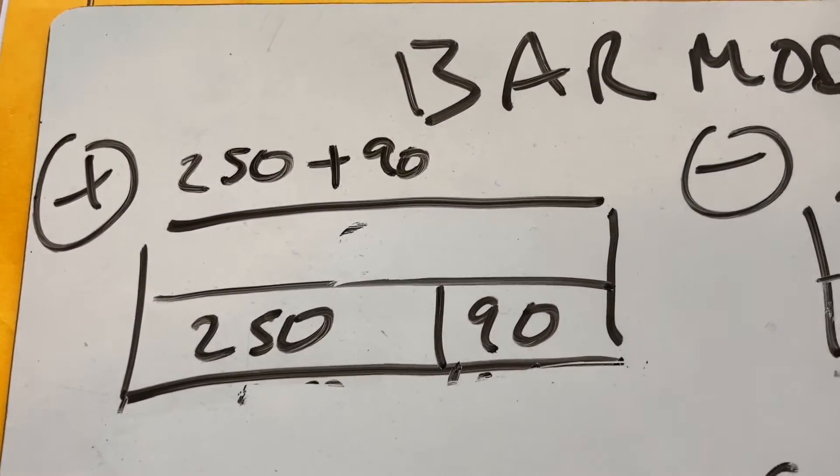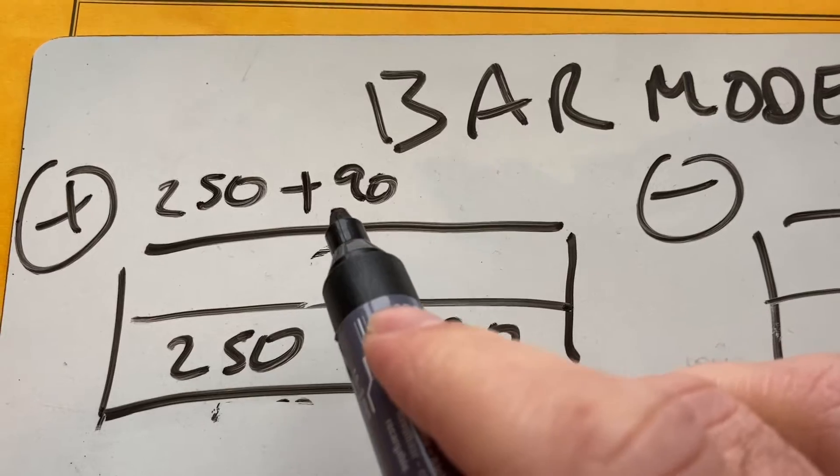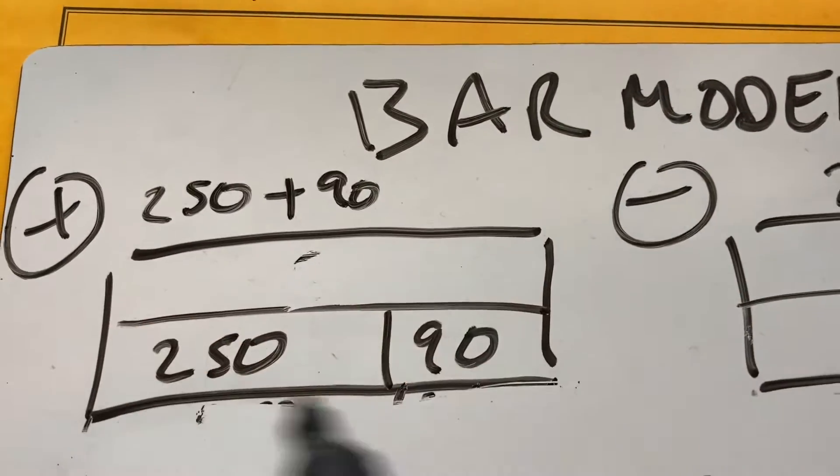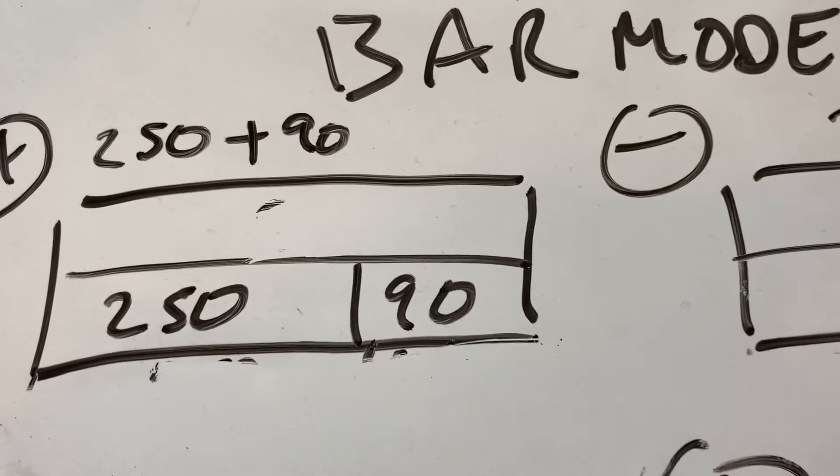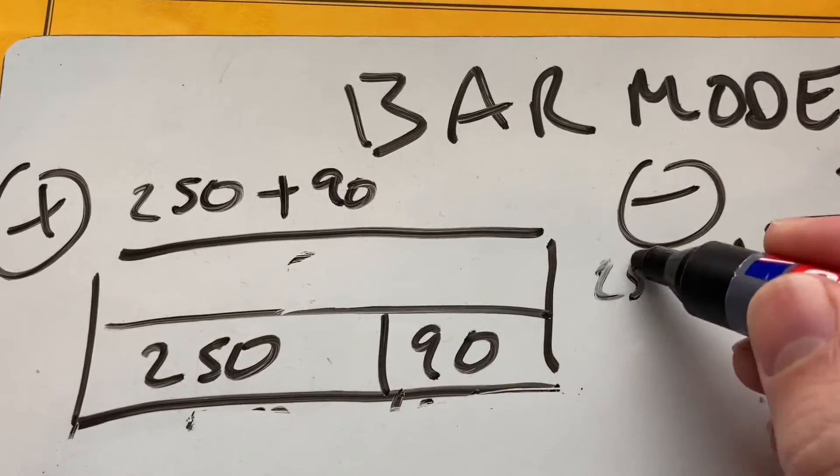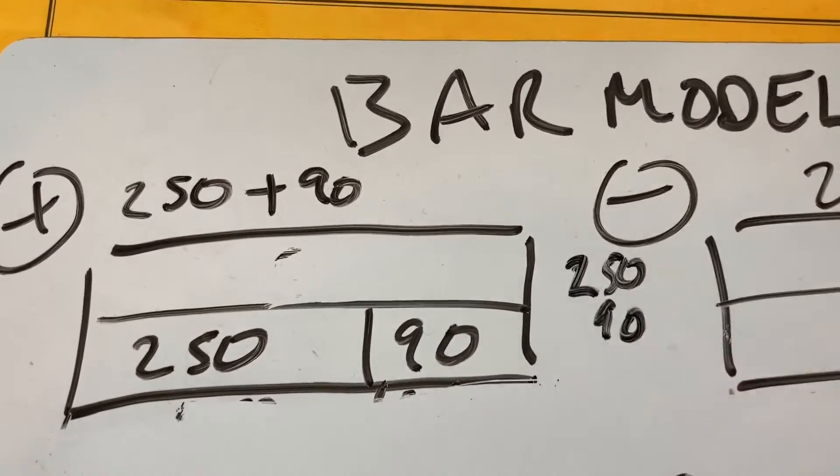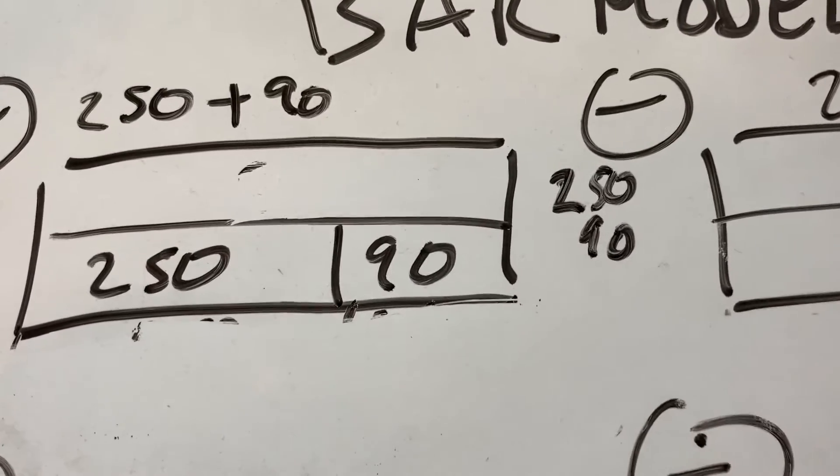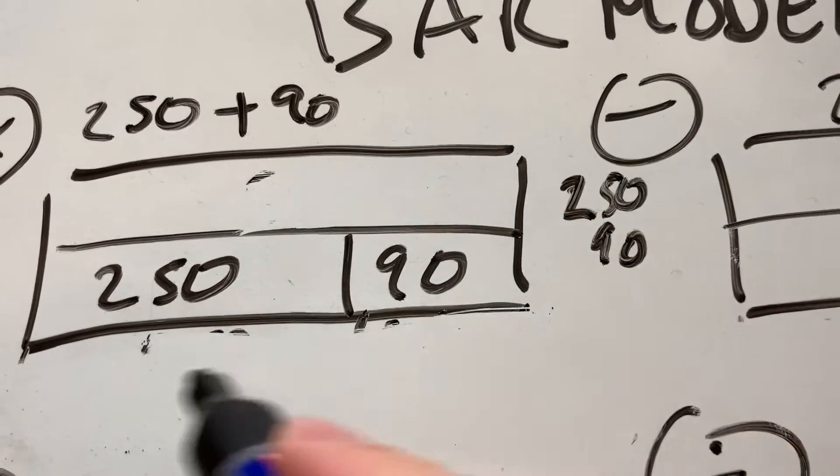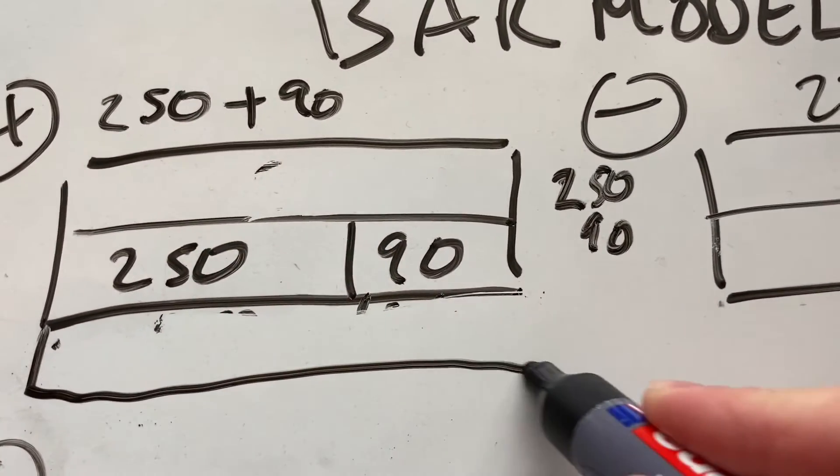So adding two terms, 250 plus 90. See how does this bar model help us represent that? We might still want to do column addition to add these two numbers or maybe use a number line. I do like number lines. But one thing I like to do is get to a big round number to help us. So I'm actually going to add another bar there.